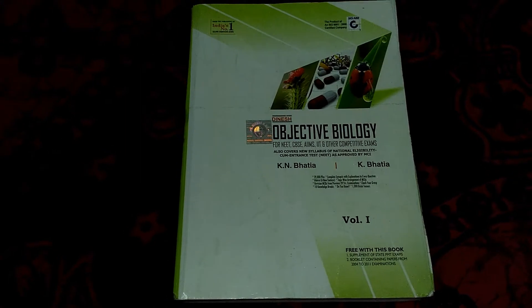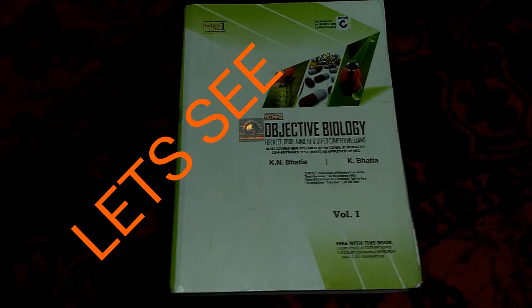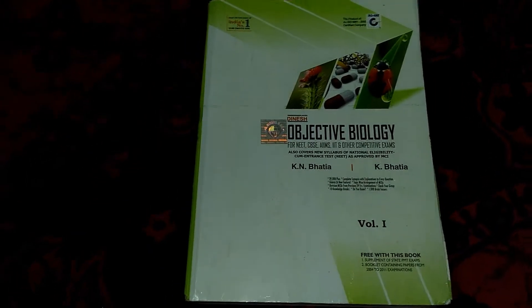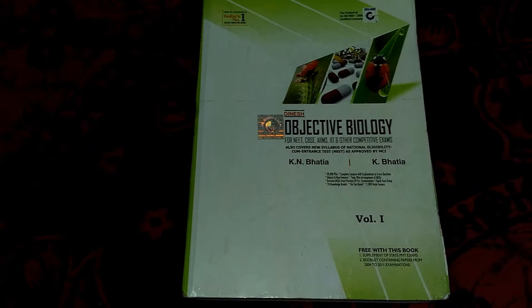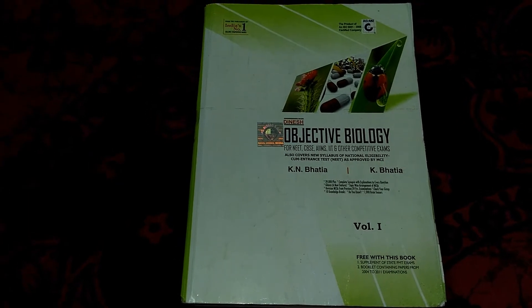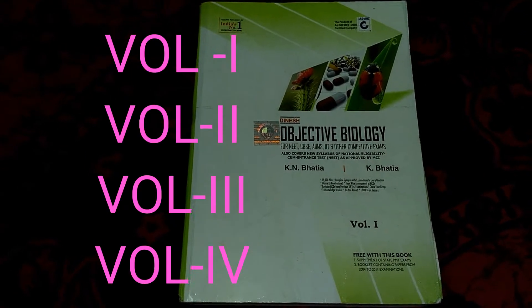Hello friends, this is Karlak video. Today I present another book: Objective Biology written by K.N. Vatia and K. Vatia. This Dina's Objective Biology book has four volumes in the new edition. Here we see the first volume — this is the old version, but the detailed content will be the same as the new version. Let's see the inner portion of the book.